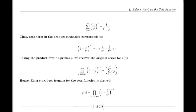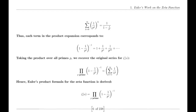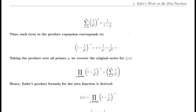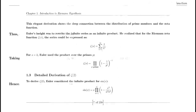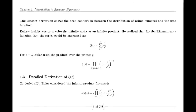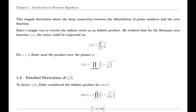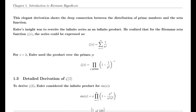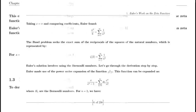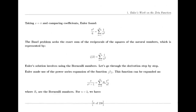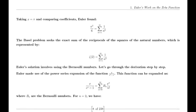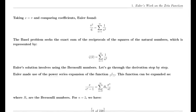Functional Equation of the Zeta Function. The functional equation of the zeta function relates its values at s and 1−s through a complex expression involving π, the gamma function, and trigonometric functions. This equation is a key result in the theory of the zeta function, showcasing its symmetry and the deep relationships between different mathematical concepts.